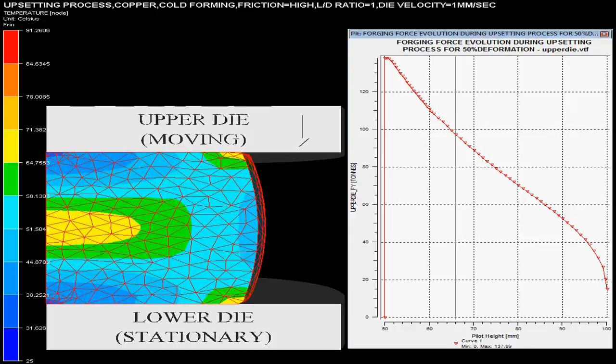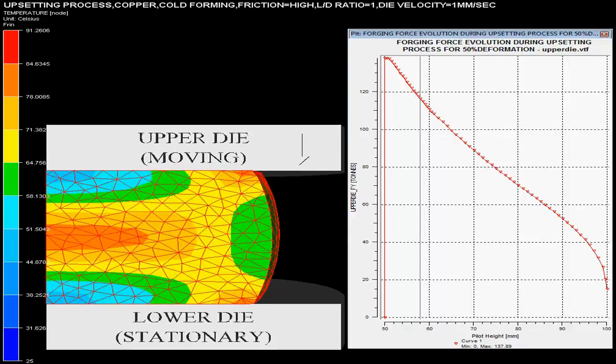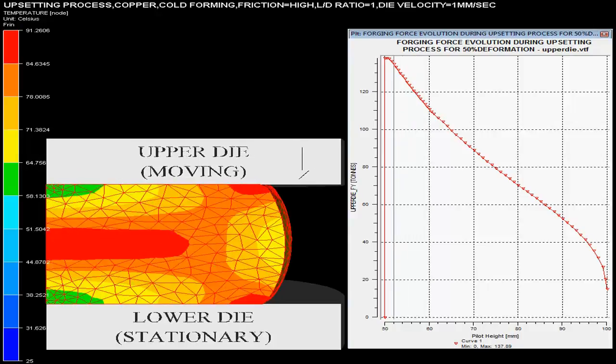The scale on the left hand side describes the temperature in billet changing during the process.